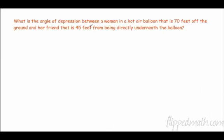What is the angle of depression between a woman in a hot air balloon, so here's a woman in the hot air balloon, that is 70 feet off the ground, so this is 70, and a friend that is 45 feet from being directly below her? So this is 70, this is 45. Now we need to remember that angle of depression is actually this angle. That's all right, we just need to make some adjustments.